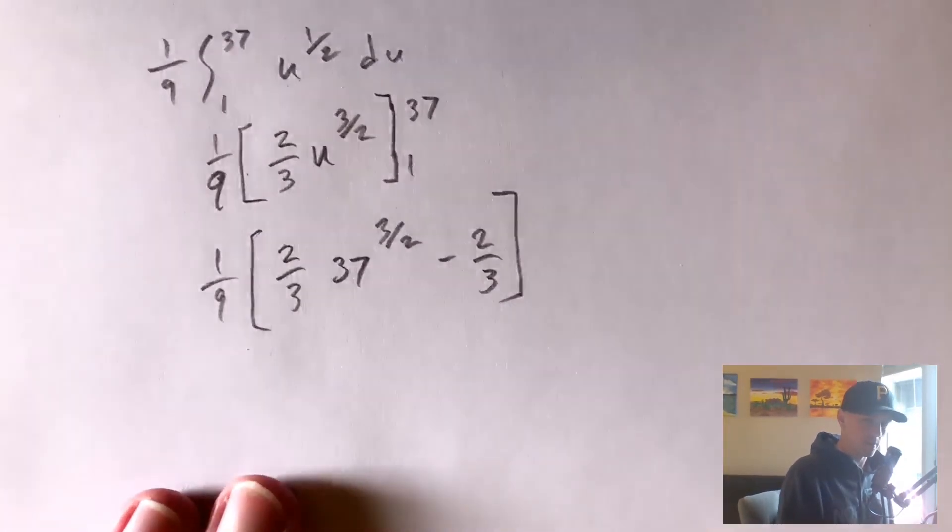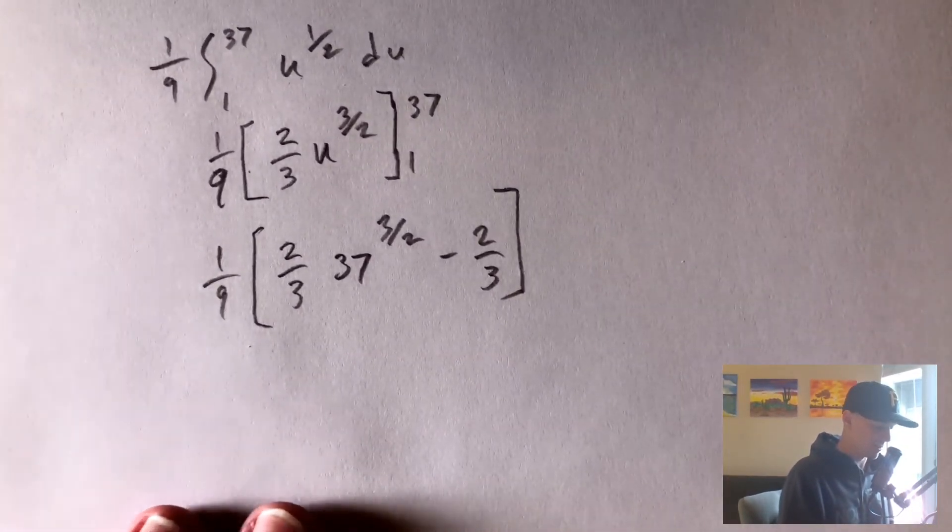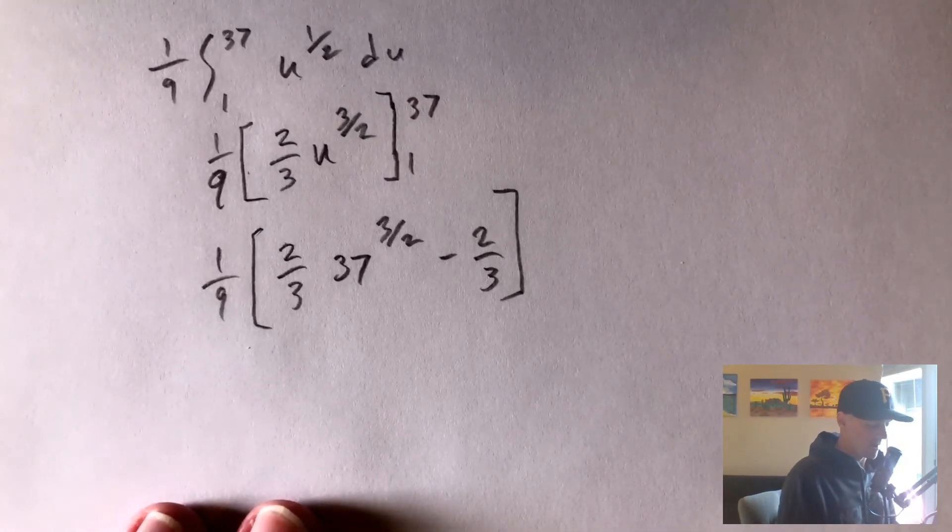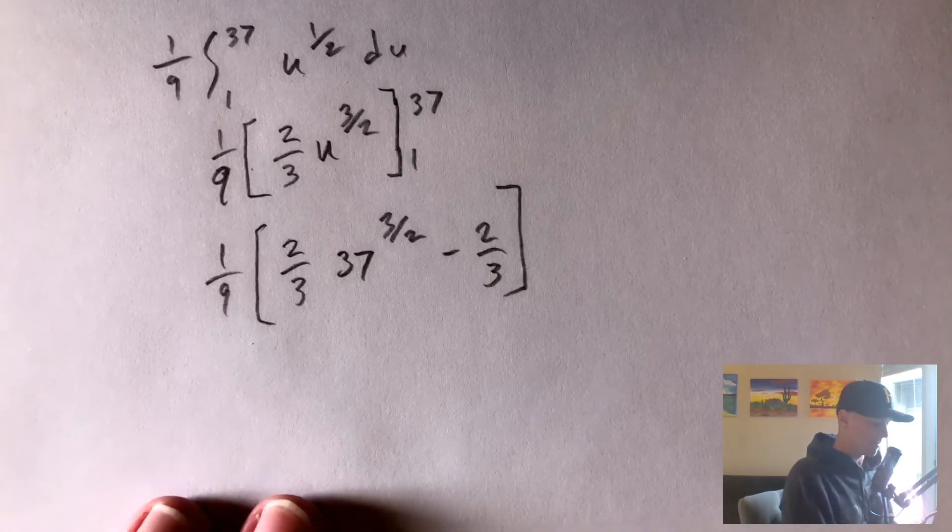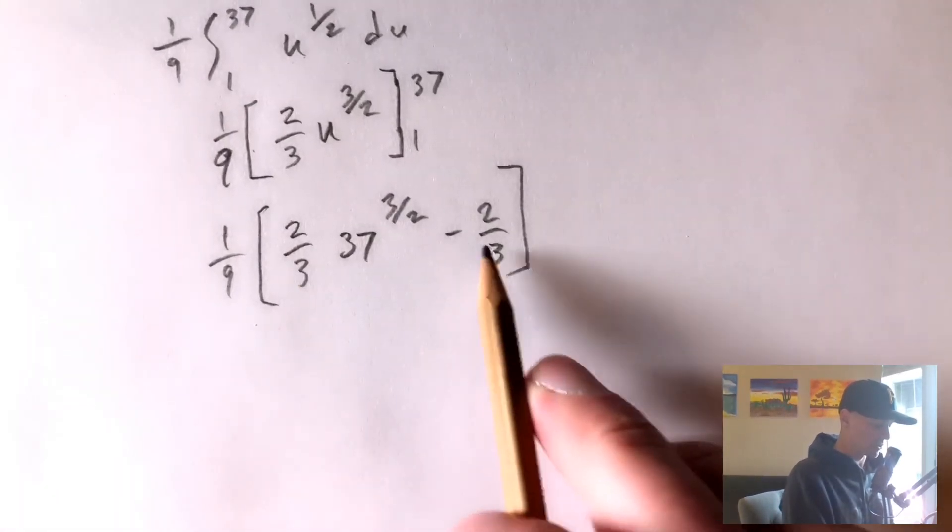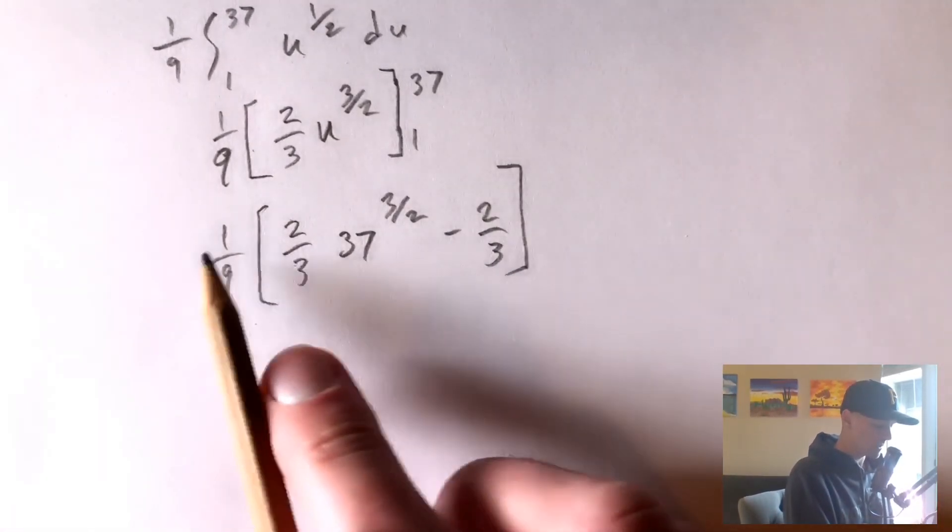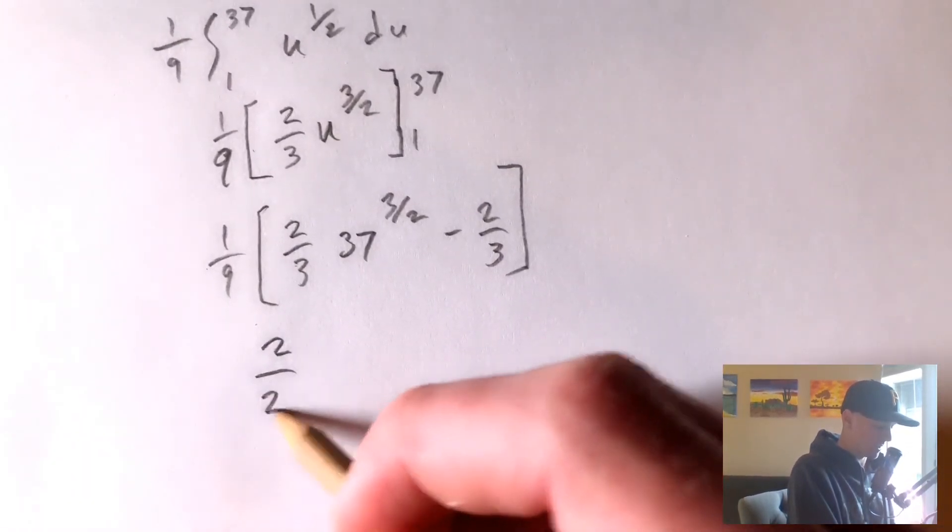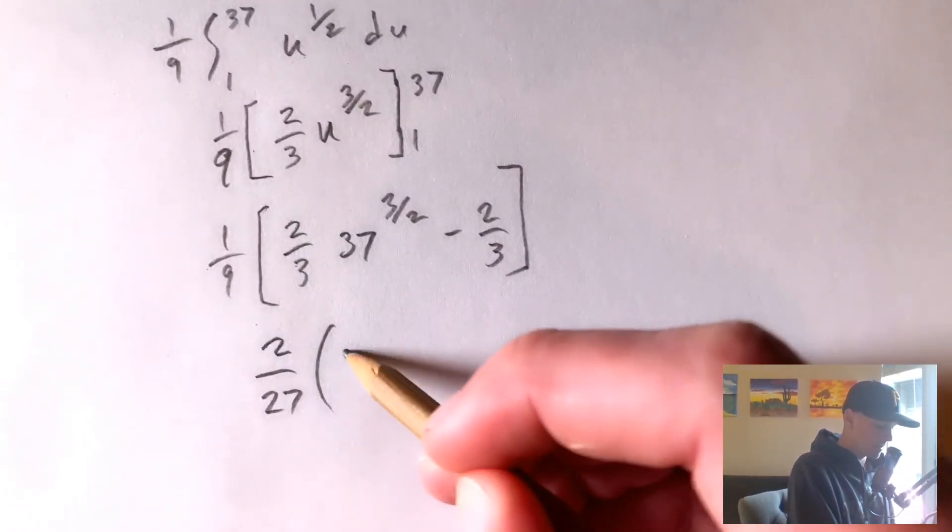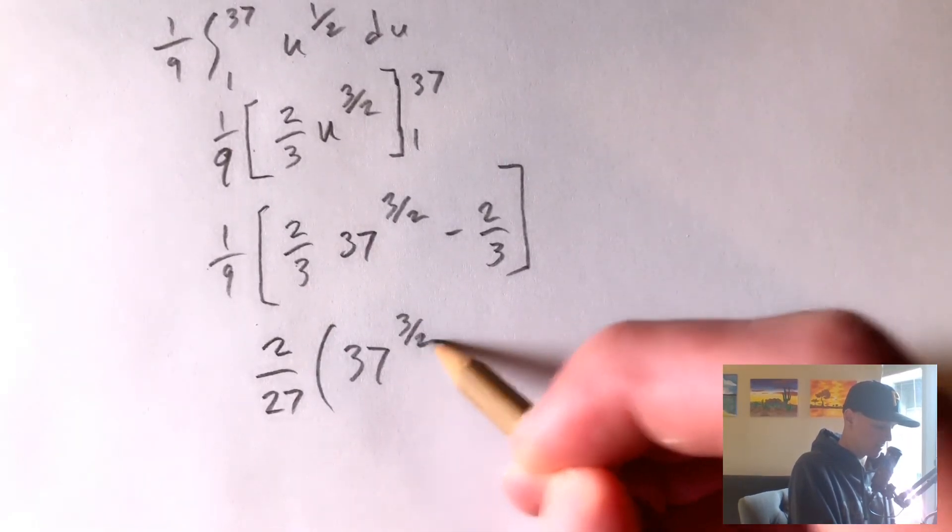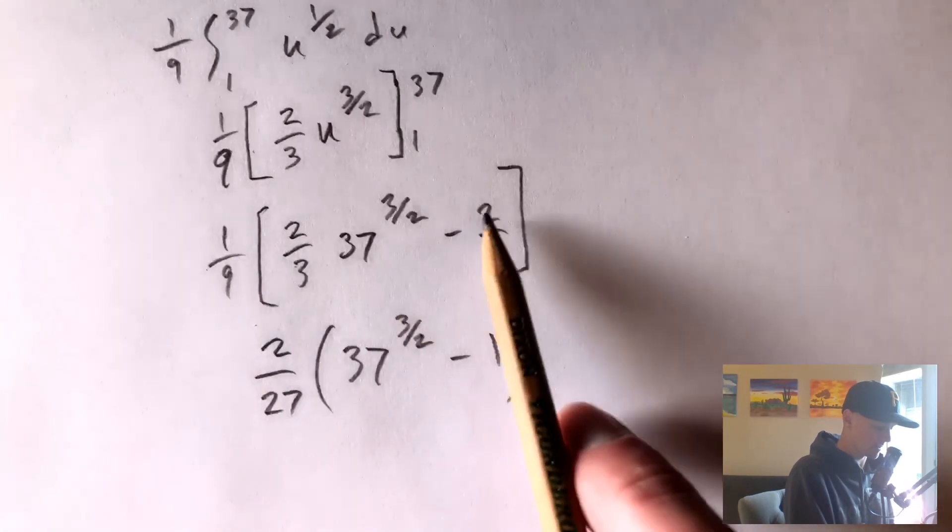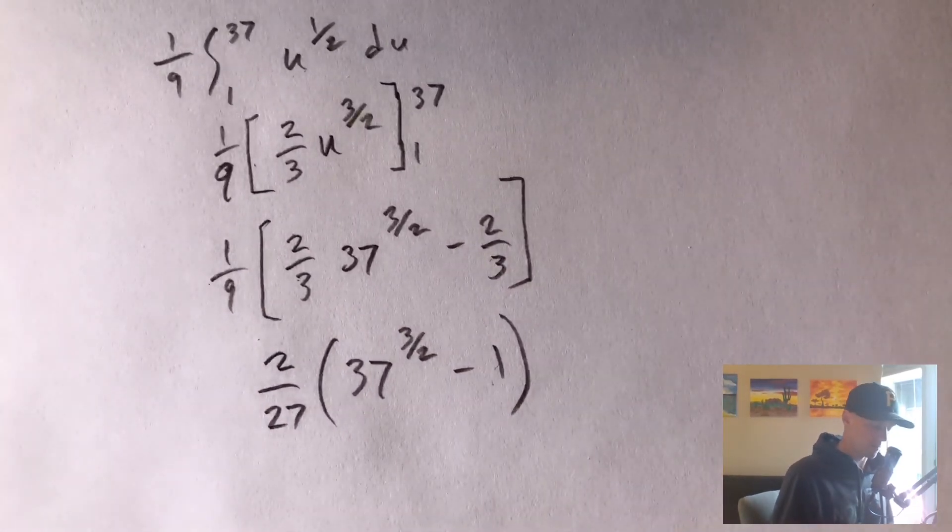So really, 37 to the 3 halves is not going to be a very nice number. So probably just leaving it as 37 to the 3 halves is probably the easiest thing to do. But we can simplify this a bit by pulling 2 thirds out of here. So 2 thirds times 1 9th would be 2 over 27 times 37 to the 3 halves minus 1. Because if we pull a 2 thirds out, that's going to leave us with a 1 in that, kind of as a placeholder.